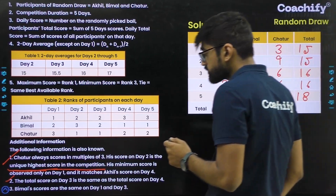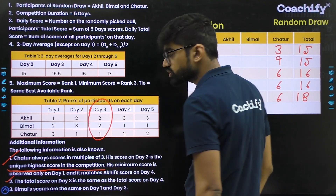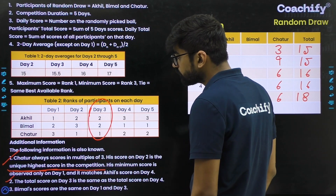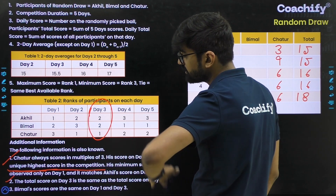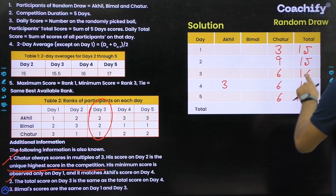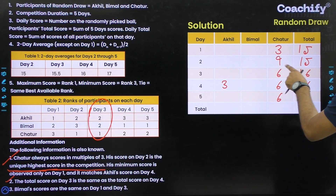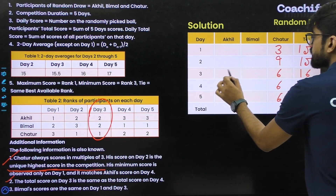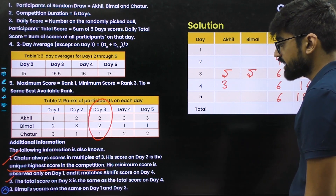Looking at the ranks for day 3: Chatur has rank 1, meaning he has the maximum score of 6. Akhil and Bimal have the same rank, meaning their scores are equal. The total for day 3 is 16; subtracting Chatur's 6 leaves 10 for Akhil and Bimal combined. Since both are equal, each scores 5. So Akhil = 5 and Bimal = 5 on day 3.